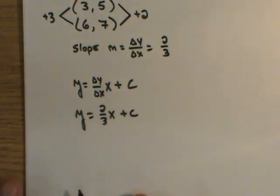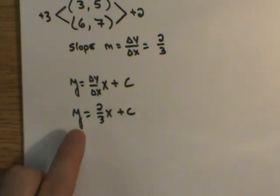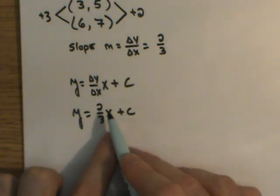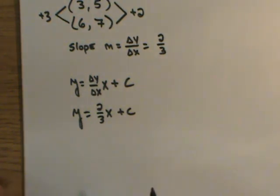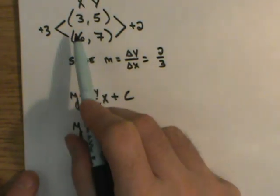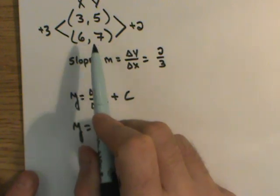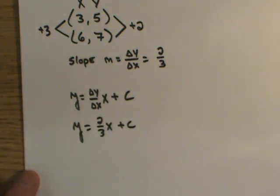This is called slope intercept form. So I'm providing you with one piece of information. I need the other piece of information. I need to know what the intercept is. To find the intercept, I plug in one of the sets of ordered pairs. Doesn't matter which one. Just pick one and plug it in.